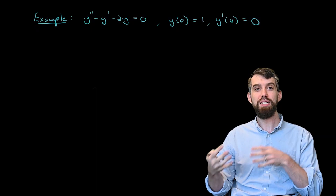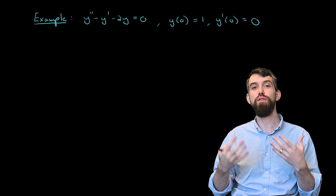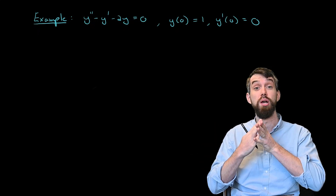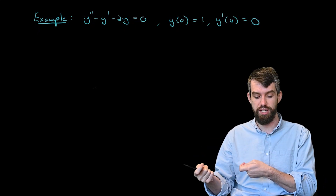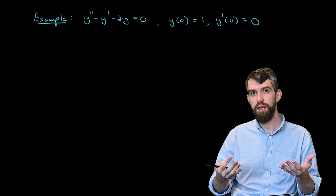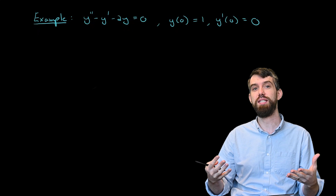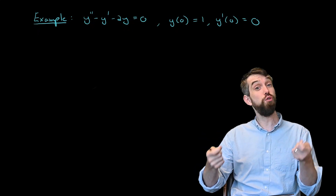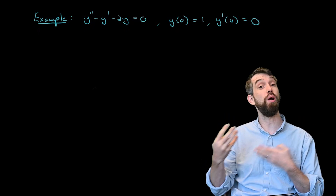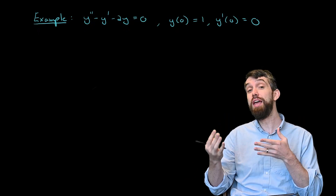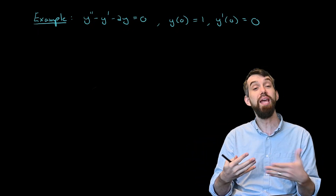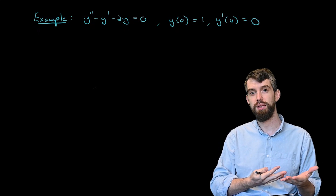In this video we're going to see how we can use the Laplace transform to solve an initial value problem like this one. We have y double prime minus y prime minus 2y equal to 0, some ODE, together with two initial conditions: y(0) = 1 and y'(0) = 0. The big idea is that we apply the Laplace transform and turn this differential equation into an algebraic equation, solve it, then take the inverse Laplace transform to get back the solution.